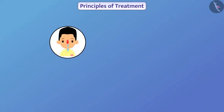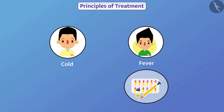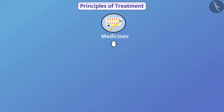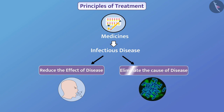Some diseases like cold are cured without taking medicines, but some diseases are cured only after taking medicines. There are two ways of treating infectious diseases using medicines. The first way is to reduce the effect of the disease, and the second is to eliminate the cause of the disease.